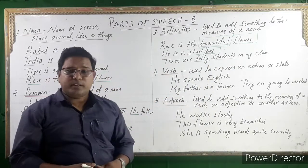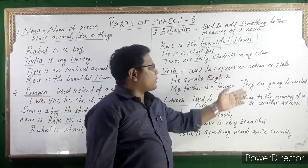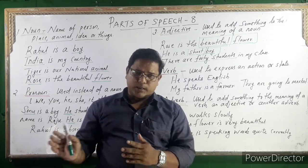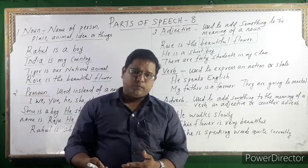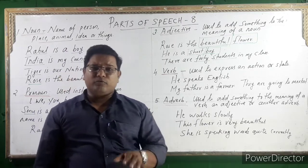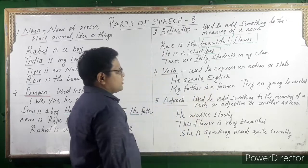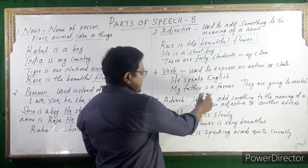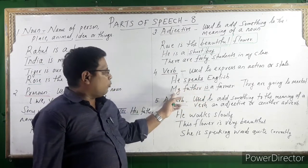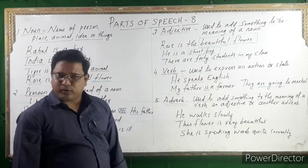Next: Verb. Verb is a doing word — sometimes called an action verb. It is used to express an action or state. Action verbs include: eat, eating, ate, eaten; drink, drinking, drunk; work, works, working; write, writes, writing; take, taking. Verb means 'kriya'. For example: 'He speaks English' — 'speaks' is the verb. 'My father is a farmer' — 'is' is an auxiliary verb. 'They are going to market' — 'are going' includes auxiliary and main verb.